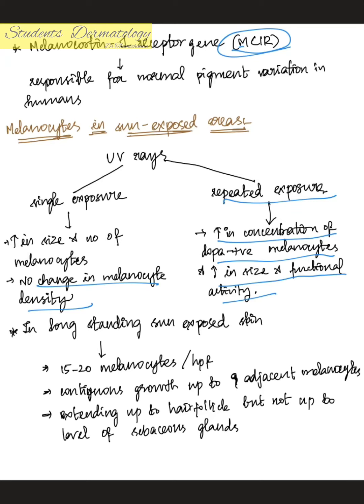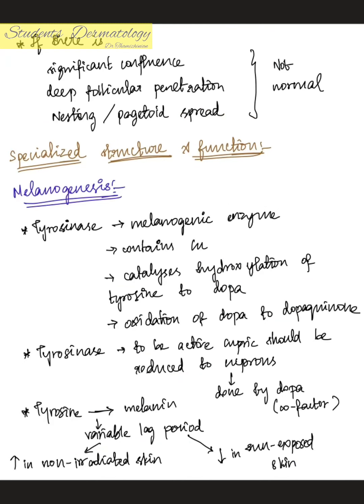In long-standing sun-exposed skin, there are 15 to 20 melanocytes per high-power field, and you can see contiguous growth of up to nine adjacent melanocytes extending up to half the follicle but never up to the level of the sebaceous gland. If there is any significant confluence of melanocytes, deep follicular penetration, nesting, or pagetoid appearance, that is not normal.